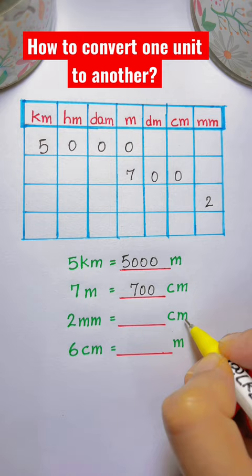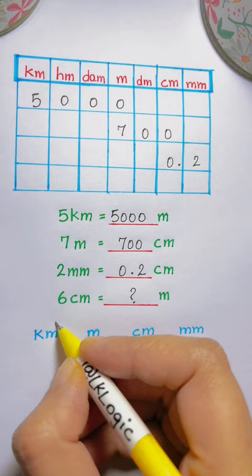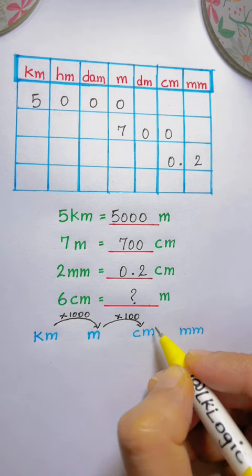So basically, when you're converting a larger unit to a smaller one, you multiply by the multiples of ten. And when you're converting a smaller unit to a larger one, you divide by the multiples of ten.